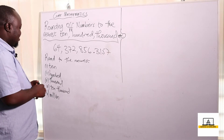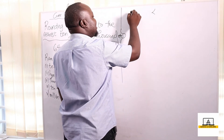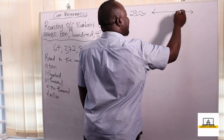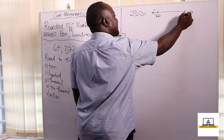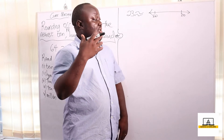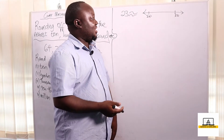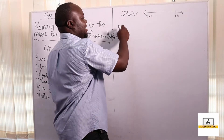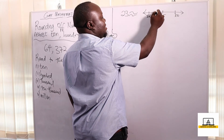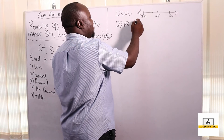Let's talk about the nearest ten. If I have twenty-three and I want to round twenty-three to the nearest ten: twenty-three is between twenty and thirty. When we talk about the nearest ten, we are talking about ten, twenty, thirty, forty, fifty, sixty, seventy, eighty, ninety, and so on. The middle of twenty and thirty is twenty-five, and twenty-three is below twenty-five, which is closer to twenty. So twenty-three rounded to the nearest ten becomes twenty.